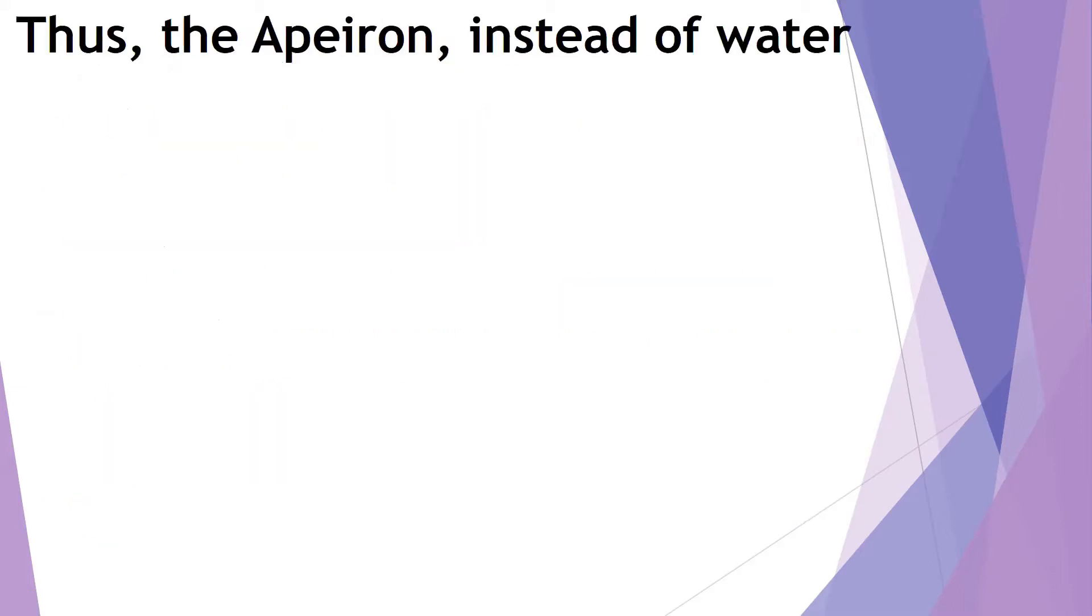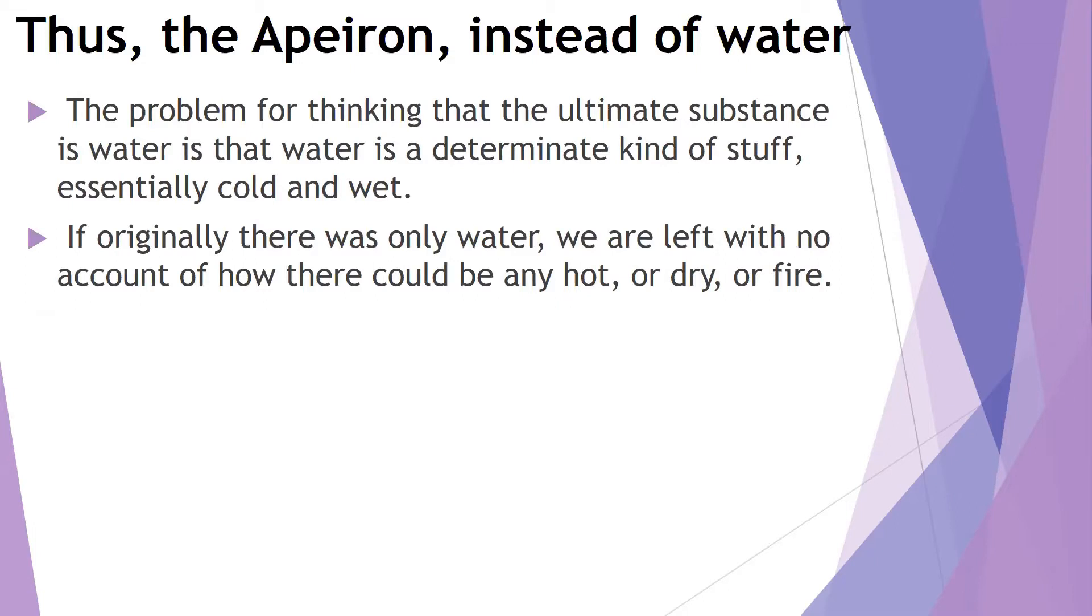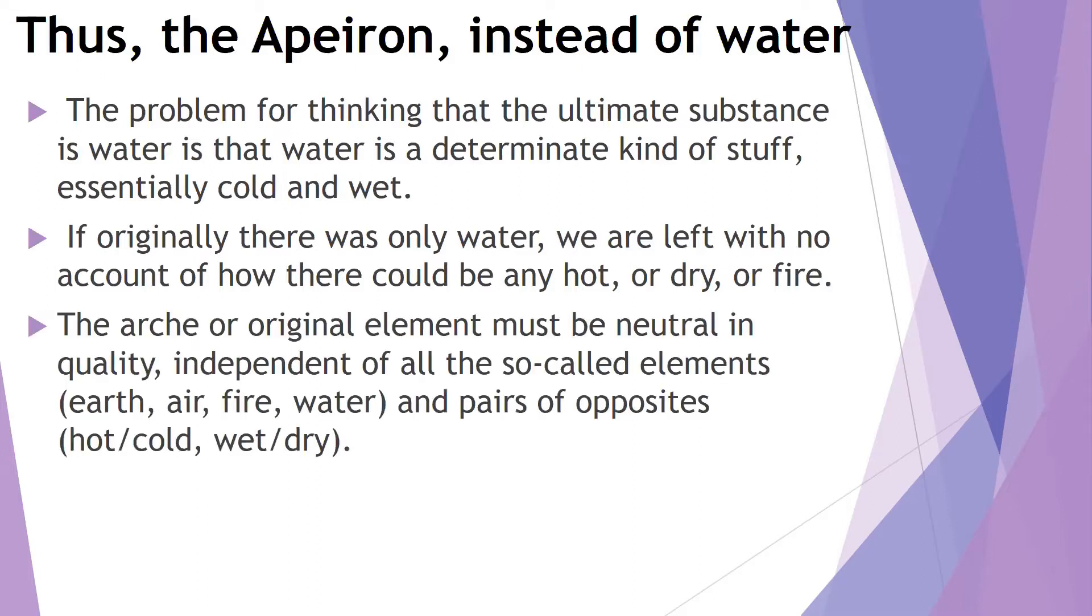Okay, so we have the Apeiron, instead of water, being the archē. And to kind of sum up the idea from the argument, the problem for thinking that the ultimate substance is water is that water is a determinate kind of stuff, and it's essentially cold and essentially wet. So if that was all that exists, if originally there was only water, if we think if we have a cosmological interpretation of the water being the archē, the stuff out of which everything else began to exist, we're left with no account of how there could be any hot or dry or the element of fire. So the archē or the original element has to be neutral in quality, and it has to be independent of all those elements, the four elements, earth, air, fire, and water, and the pairs of opposites. It has to be independent of those as well. It can't be hot or cold or wet or dry.